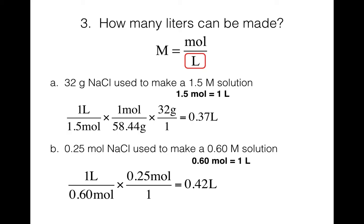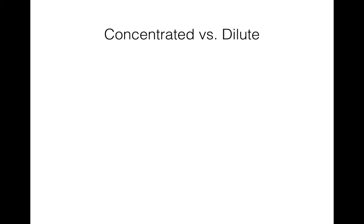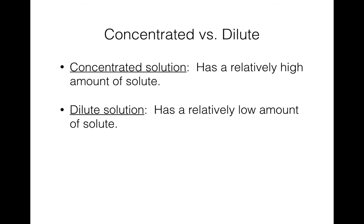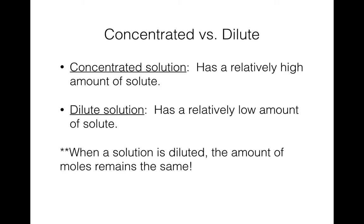Those are the three types of molarity problems. Now we're going to move on to dilution calculations. Before we get into the calculations, let's go over the terms concentrated and dilute. A concentrated solution means you have a relatively high amount of solute dissolved in the solvent. If you have a dilute solution, you have a relatively low amount of solute. These two terms are relative — you can say one solution is more concentrated or more dilute than another.